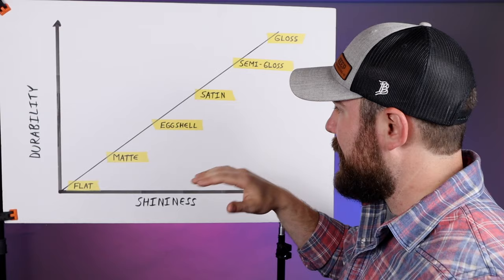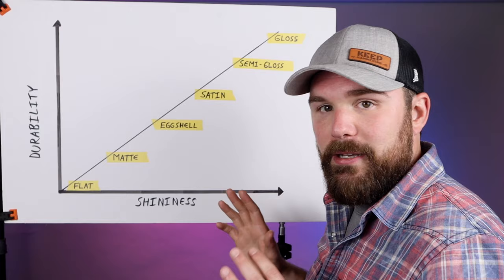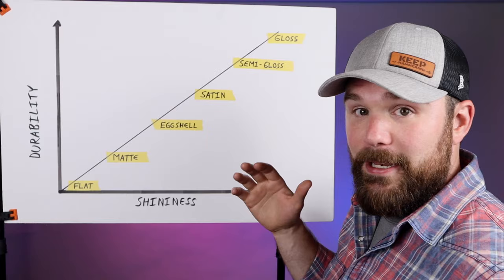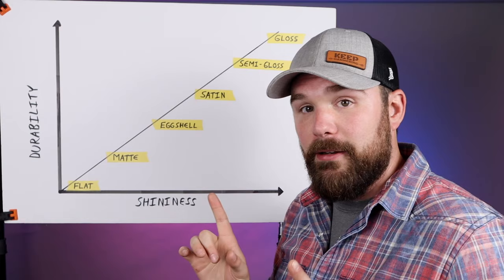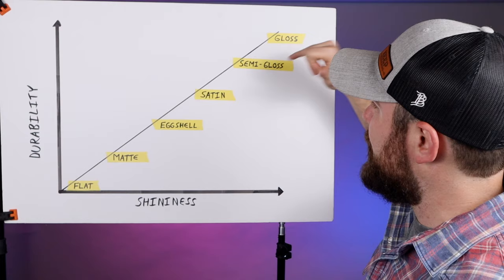Moving up to satin—I only included satin because you're going to see it a lot. I almost never use satin on anything. In my personal opinion, it's generally too shiny for walls and not shiny enough for trim. I do use satin polyurethane, but that is a completely different application. Moving on to semi-gloss...